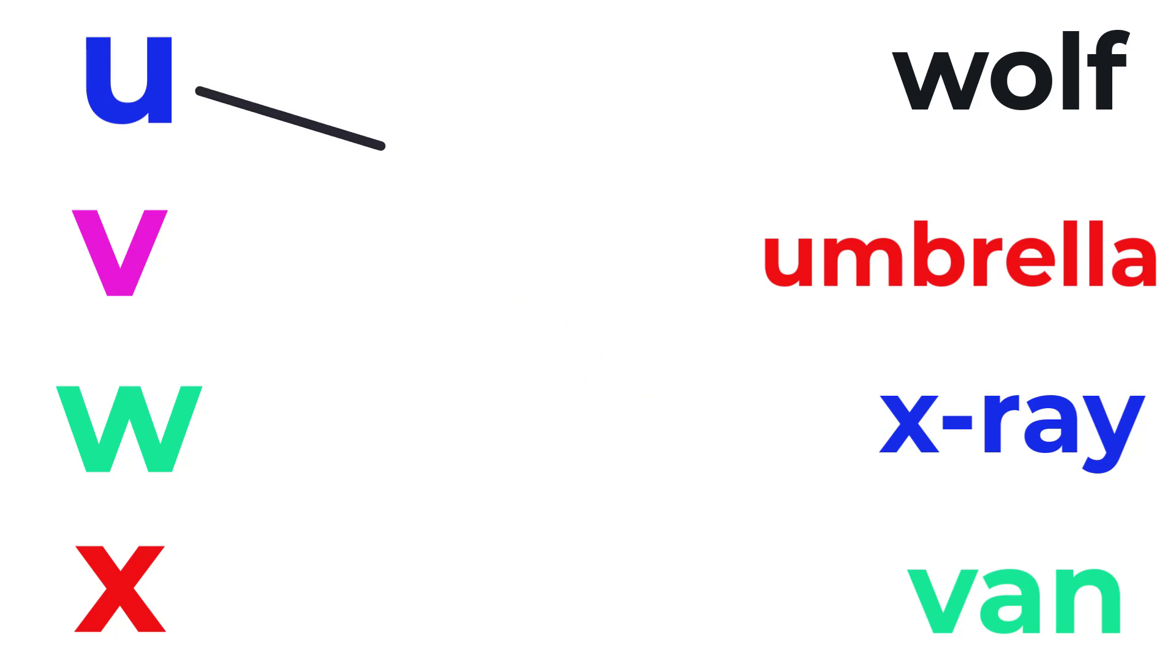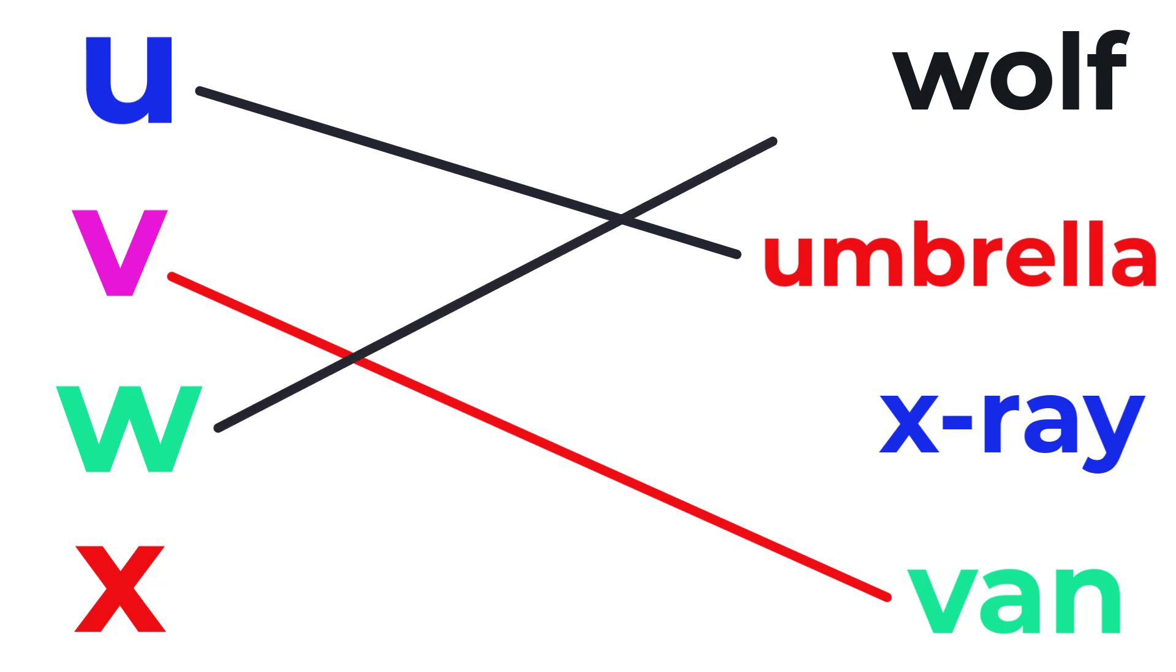U for Umbrella, V for Van, W for Wolf, X for X-Ray